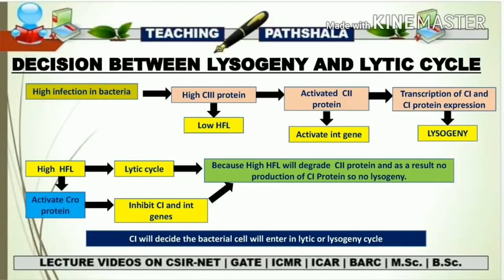To summarize the key points: C2 acts as an activator for C1 protein because C2 helps in transcription of C1 gene. If there is high C3 protein, there will be low HFL protein. Low HFL or mutated HFL leads to induction of the lysogenic cycle. If the condition reverses and HFL is high, that activates Cro protein, which inhibits C1 and INT gene — the main factors behind lysogeny — causing the lytic cycle to occur instead.